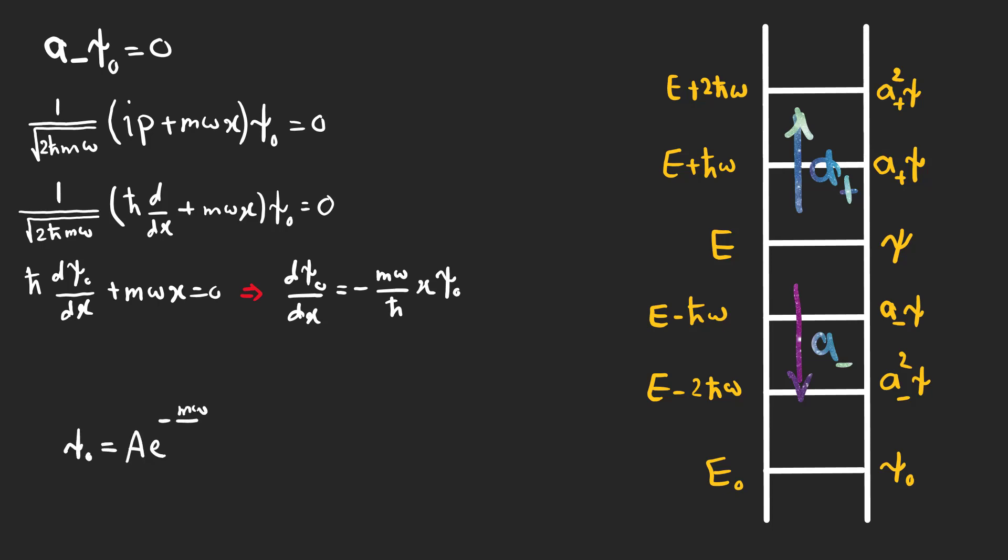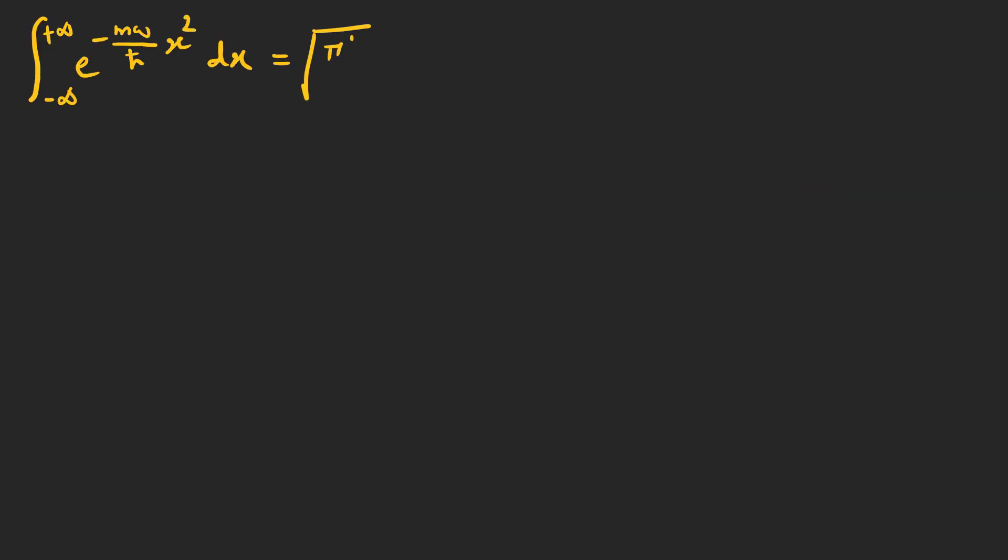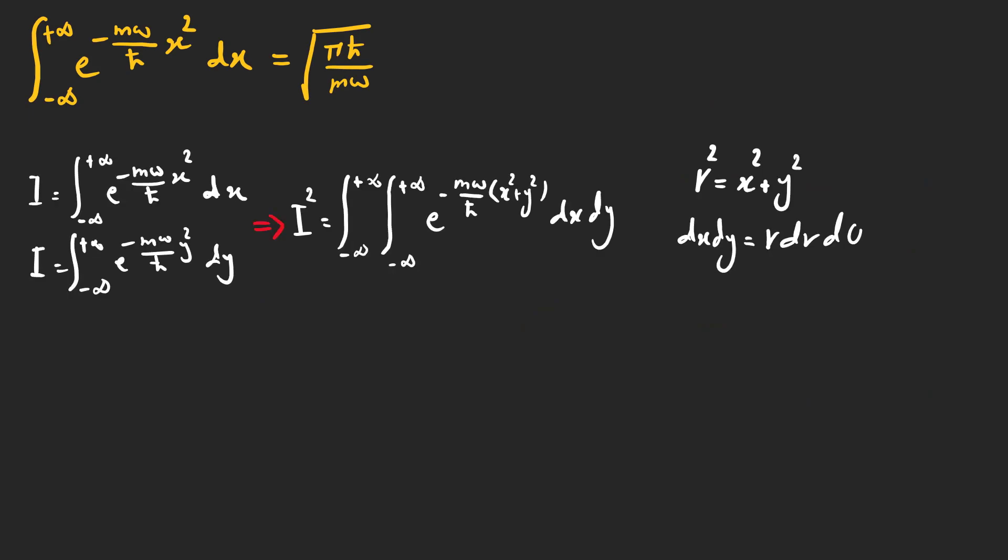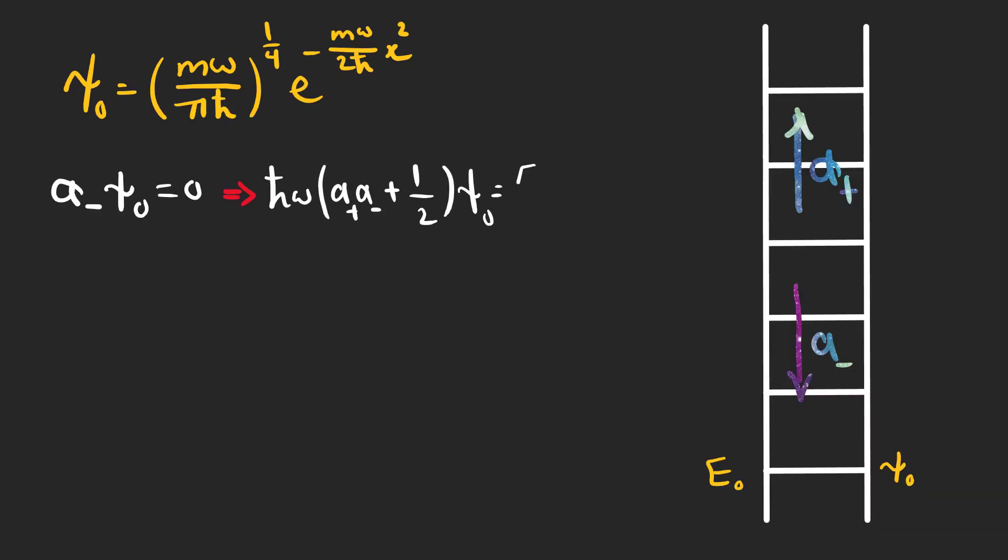By integration, we have this equation. And psi zero is equal to this expression. We can also find a using the normalization condition. Now, if you don't know how we solve this integral, this is the solution. It's a really nice trick to solve the integral by changing coordinates. We can also use the Schrodinger equation to find the energy of the ground state, which is equal to half h-bar omega.